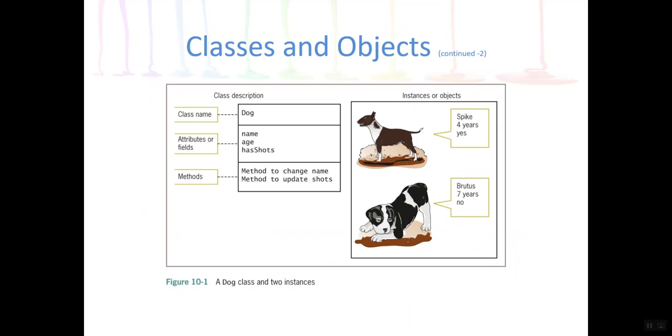And it's basically saying all dogs have a name, age, and whether or not they've had shots, and we need a method to change the name and update shots. So once we create a class in programming code, we can then in programming code create instances of that class or what we call objects. So I can create an object named Spike who's four years old, who's had its shots, as well as an object named Brutus who's seven years old who hasn't had his shots.